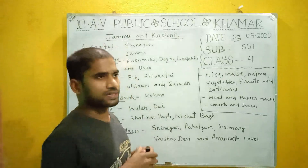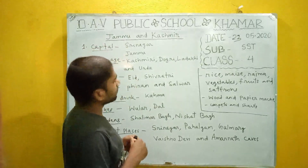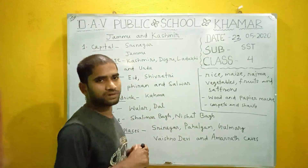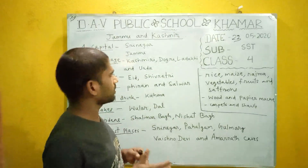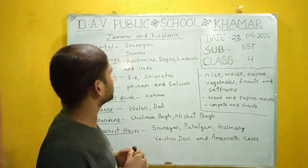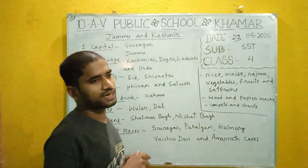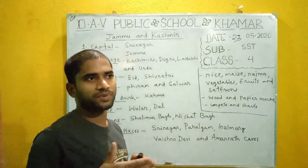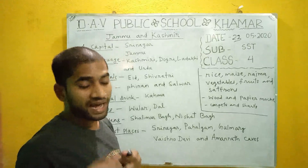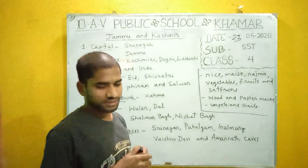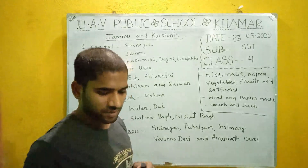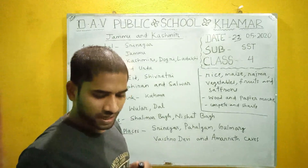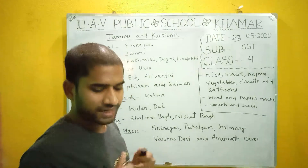Next question: What is a glacier? We have already discussed this in our last class. A glacier is a slow-moving river of ice.